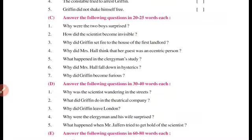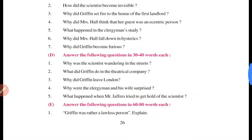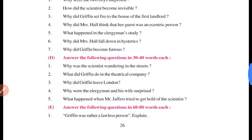Question number six: Why did Mrs. Hall fall down in hysterics? Jo Mrs. Hall hai, woh seedhiyon se kyun gir gayi thi? Mrs. Hall investigate karne ke liye gayi thi scientist ke room mein kyunki unka jo room ka darwaza tha woh khula hua tha. Toh unko jo ek chair thi, woh apne aap spring karke — uchal ke — unko aakar lagi thi aur jisse woh kaafi dar gayi thi. When Mrs. Hall tried to investigate the scientist's room, a chair sprang into the air and charged at her, so she fell down in hysterics — yaani kaafi dar se, kaafi chaunke se.